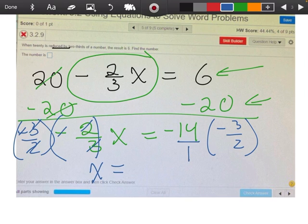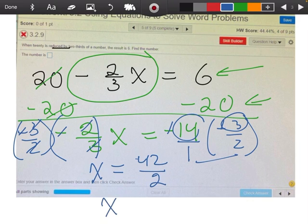I'm going to think of this negative 14 as negative 14 over 1. So again, a negative and a negative is a positive. So 14 times 3 gives me 42, and 1 times 2 gives me 2. And then finally, 42 divided by 2 leaves me with 21.